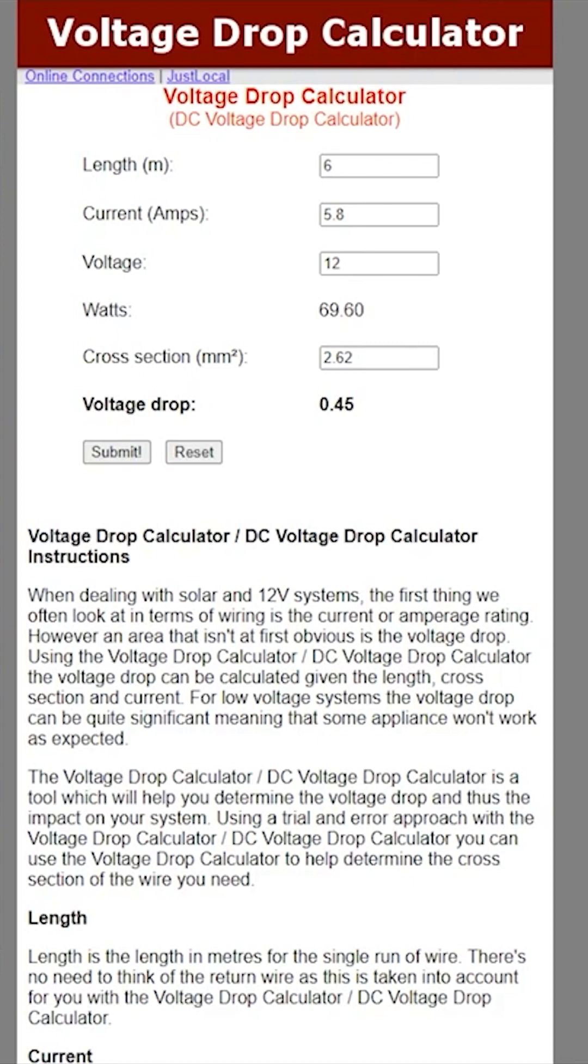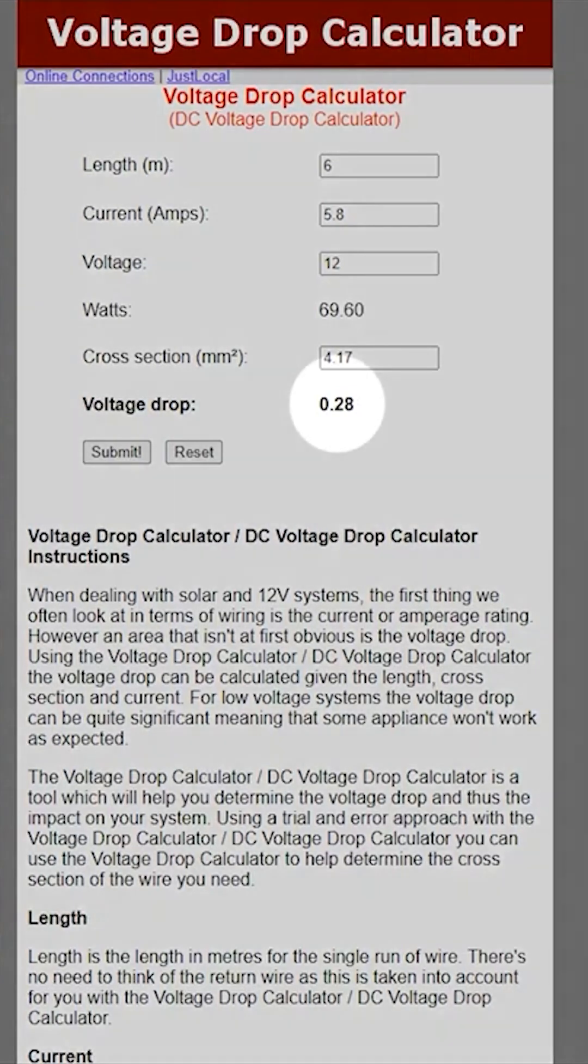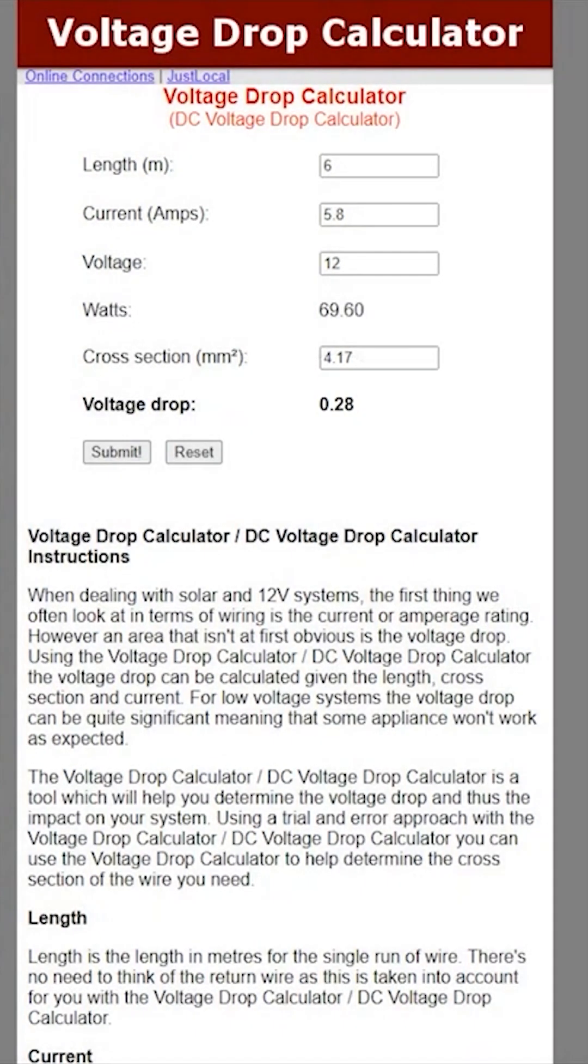In this scenario, we'll need to go up to 11AWG, or 4.17mm². This will result in a voltage drop of 0.28V, which is within the range we'll need to be in to ensure our second power injection will be able to boost the voltage of the tape properly.